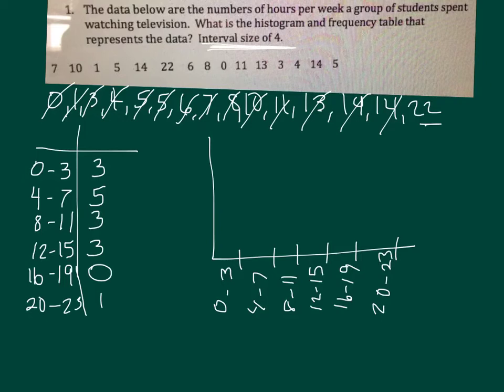And then the biggest frequency you have is 5. So the first one from 0 to 3 goes up to 3. So it's kind of like making a bar graph. So you go up to 3, over, and down. And then from 4 to 7, there's 5. So you go up to 5, over, come down.